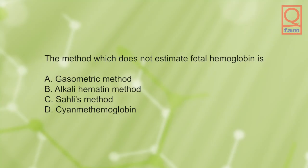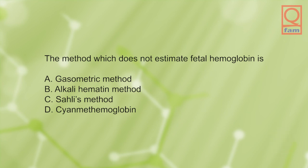The method which does not estimate fetal hemoglobin is: A) gasimetric method, B) alkali hematin method, C) Sahli's method, D) cyan-methemoglobin. The answer is B, alkali hematin method.